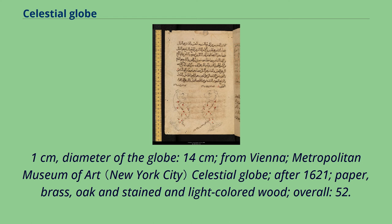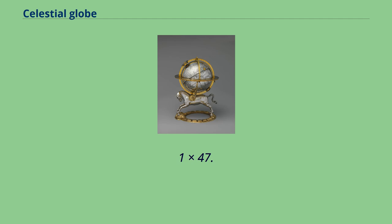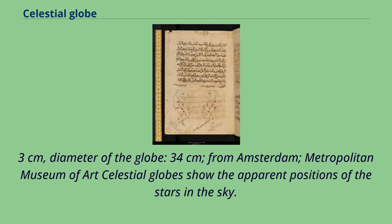Metropolitan Museum of Art celestial globe, after 1621. Paper, brass, oak and stained and light-colored wood. Overall: 52.1 x 47.3 cm. Diameter of the globe: 34 cm. From Amsterdam.